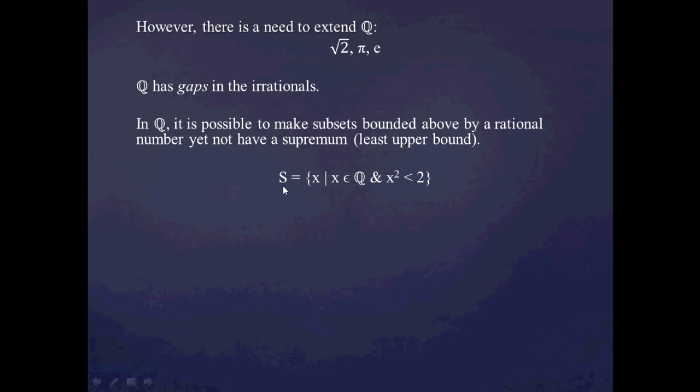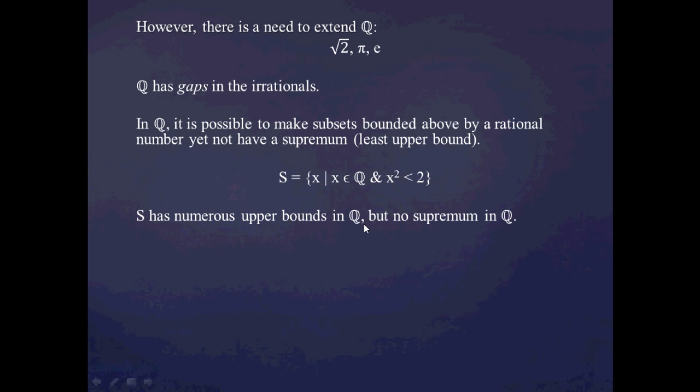Consider the set S, which is a subset of Q, consisting of members whose squares are less than 2. I claim that S has numerous upper bounds in Q. I can easily pick rational numbers greater than or equal to everything in S — one easy example is the rational number 2. Because 2 squared is 4, rational number arithmetic tells me all the stuff in S is less than 2, so 2 is an upper bound for S.